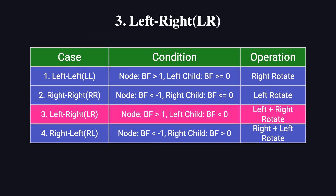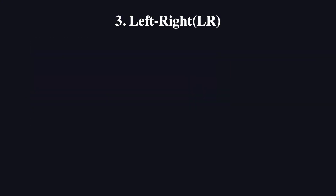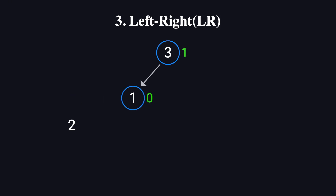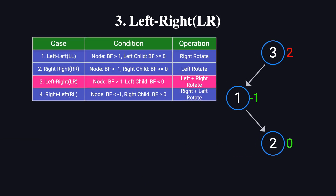Next, we have the LR, or left-right case. Suppose we insert the values 3, 1, and 2. After inserting 3, the tree has only one node and is balanced. When we insert 1, it becomes the left child of 3, and the tree remains balanced. Then we insert 2. Since 2 is greater than 1, it becomes the right child of 1. Now node 2 has a balance factor of 0, node 1's balance factor becomes -1, and node 3's balance factor becomes 2. The tree is unbalanced because node 3's balance factor exceeds 1. Using our table, we identify this as an LR imbalance. This happens when a node's balance factor is greater than 1, and its left child's balance factor is less than 0.